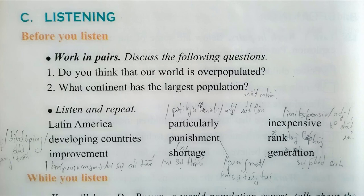Well, I think the main reason is a fall in death rates. This is due to the improvement of living conditions and medical care. I think the explosion of population has caused many problems — is that right? Yes, it is. It has caused a lot of problems such as shortage of food, lack of hospitals and schools.